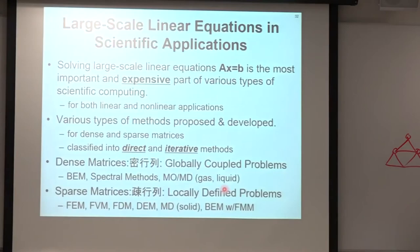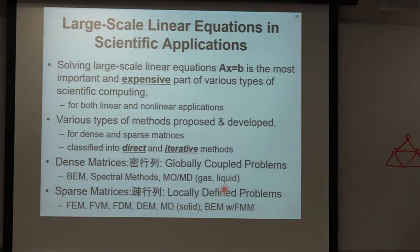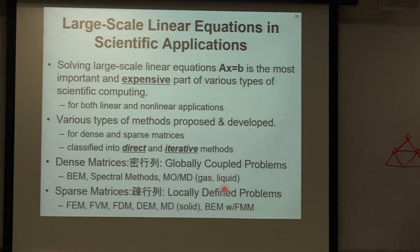The next topic is large-scale linear equations in scientific applications. Solving Ax=b is a very expensive and important operation in various types of scientific computing. Methods are classified into direct and iterative, and matrices are classified as dense (from globally-coupled problems like boundary element or spectral methods) or sparse (from locally-defined problems like finite element, finite volume, or finite difference methods). This class focuses on sparse matrices.